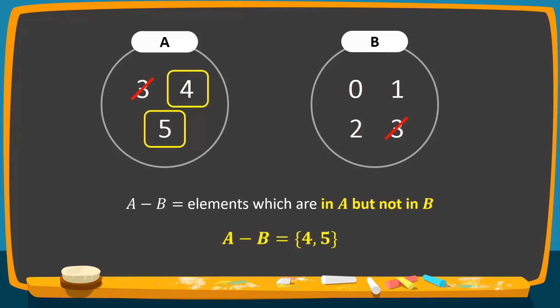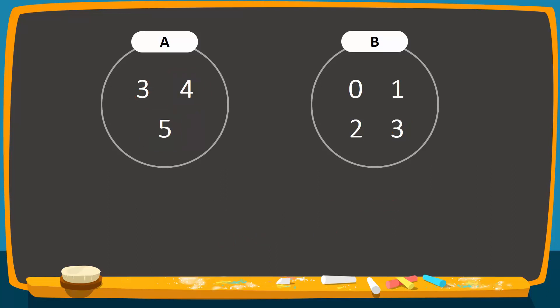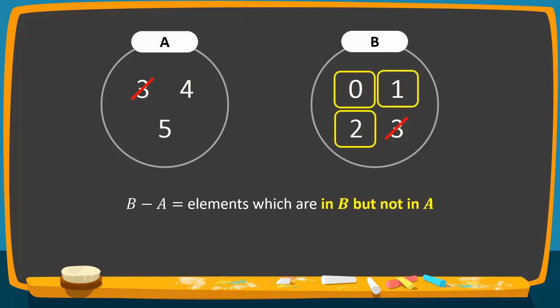B difference A will include elements which are contained in set B but not in set A. Of the elements in set B, 3 is also in set A, while 0, 1, and 2 are not. Therefore, B difference A will contain 0, 1, and 2.